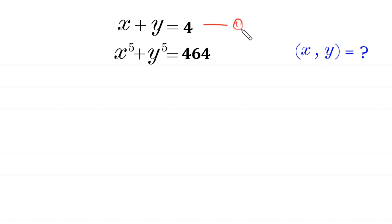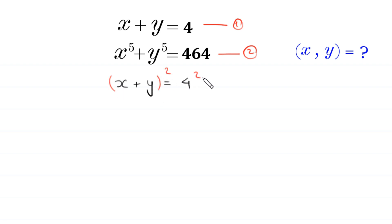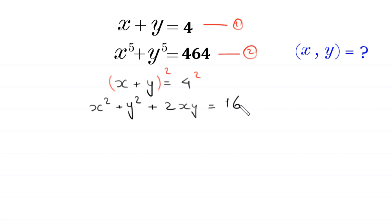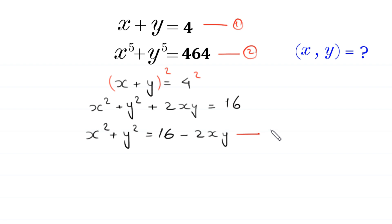We name this equation 1 and this equation 2. First of all, we take a square of both sides of equation 1. x plus y whole squared is equal to x squared plus y squared plus 2xy, which equals 4 squared, which is 16. We move the 2xy to the right hand side, so x squared plus y squared is equal to 16 minus 2xy. We name this equation 3.